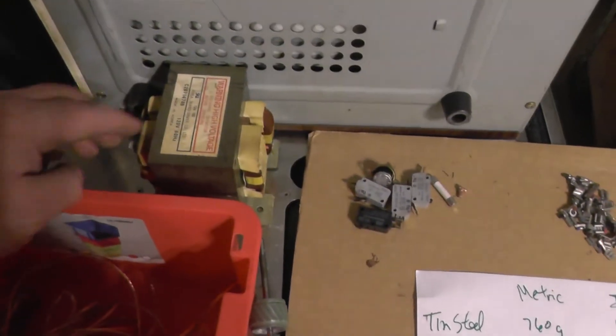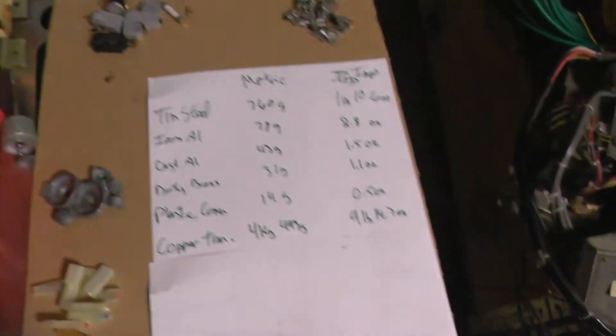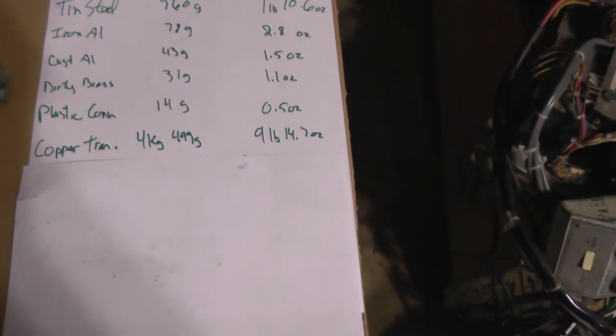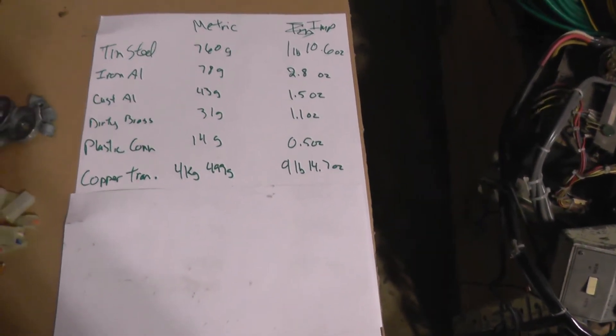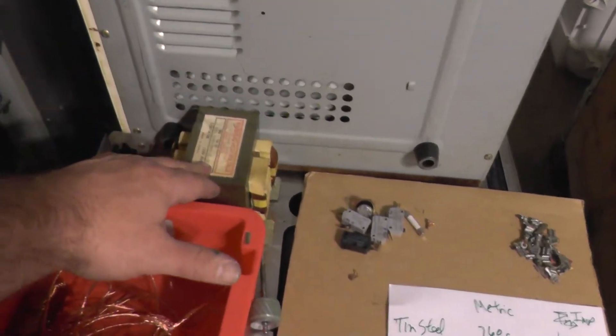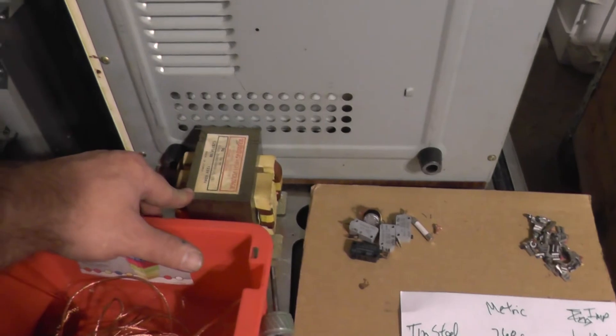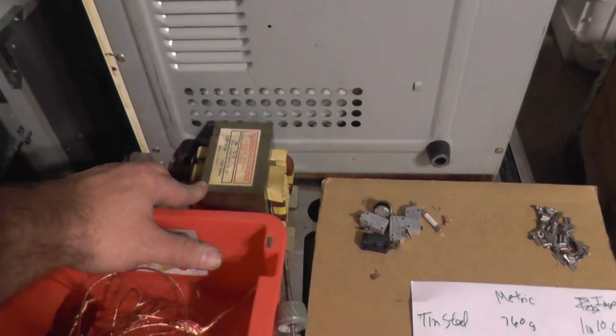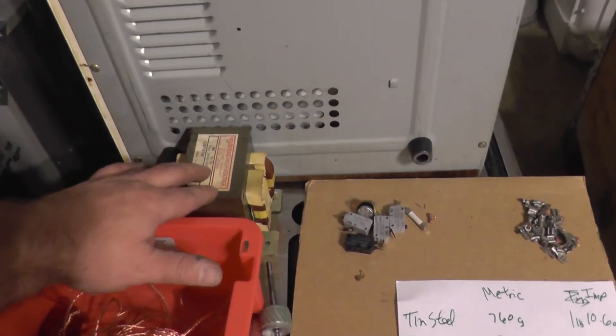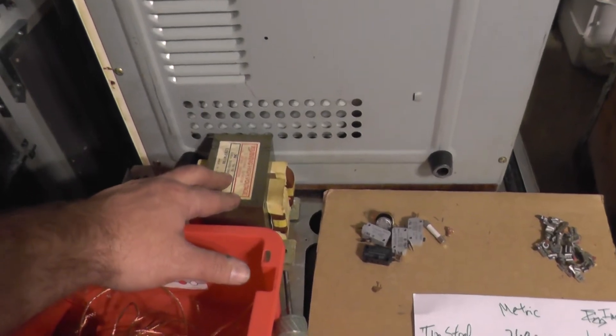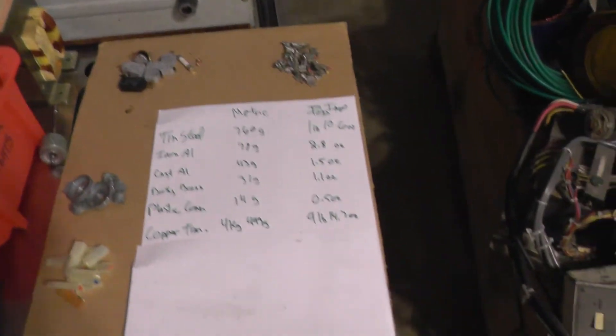The copper transformer, that's that big guy right there. It came in at 9 pounds, 14.7 ounces, or 4.5 kilograms. These, I'll show in another video how I break them apart, a fellow by the name of Jack the Scrapper. I watched one of his videos years ago and thought it was the best way of doing it. So when I get a few of those, I'll show you how I break those apart. It's a lot of fun.